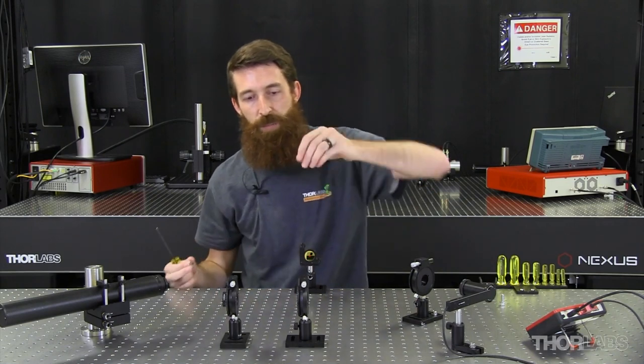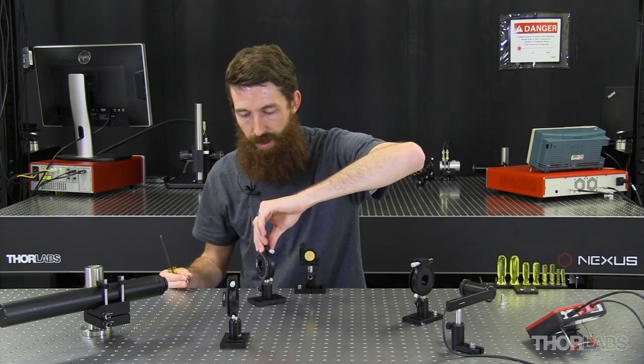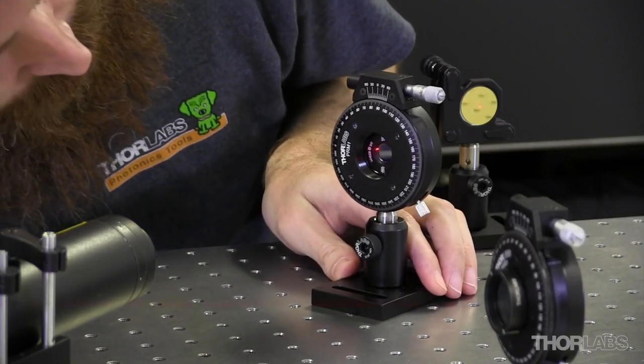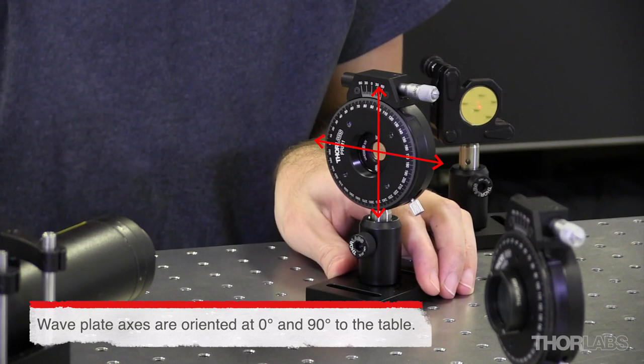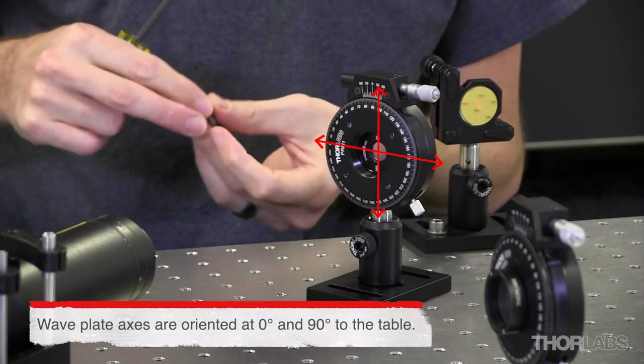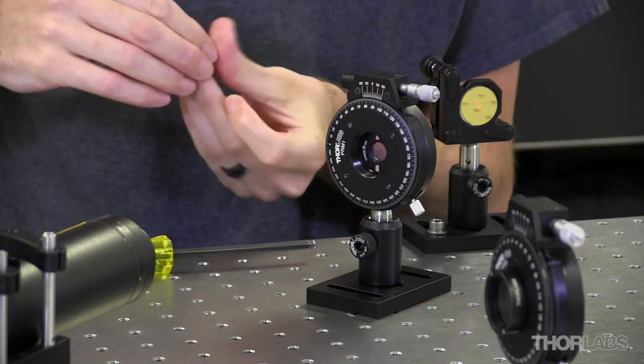Next, I will take my wave plate that's under test. Similar to the polarizer, I placed this between two crossed polarizers in order to determine that I am aligned with either the slow or the fast axis. I rotated the wave plate until I achieved a power minimum.